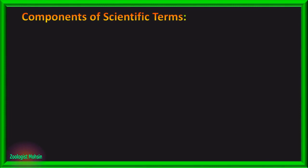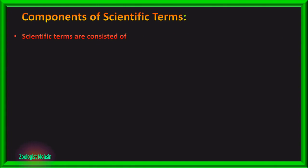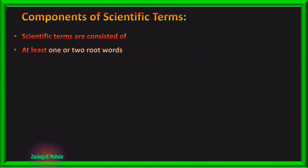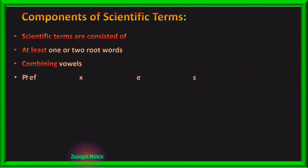Now let's understand the components of scientific terms. Scientific terms basically consist of 4 components: number one, at least one or two root words — and there are only 1200 root words; number two, combining vowels; number three, prefixes; and number four, suffixes.